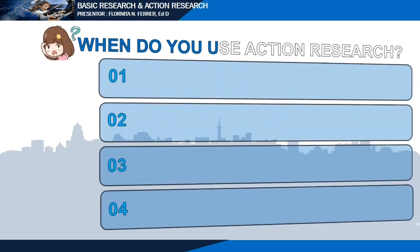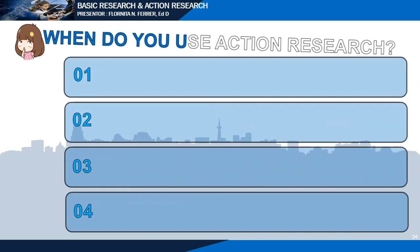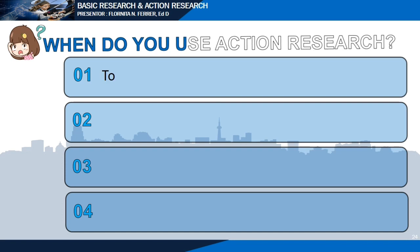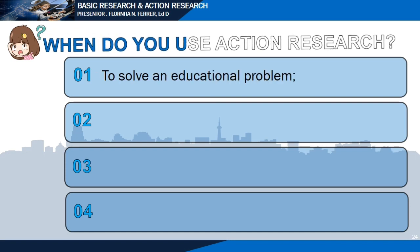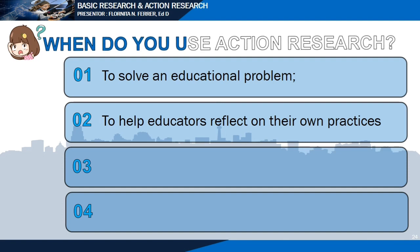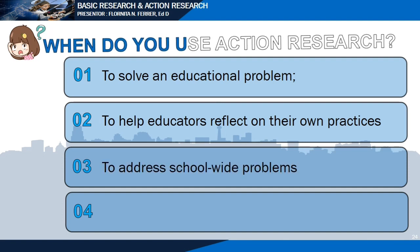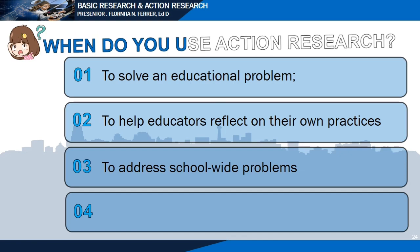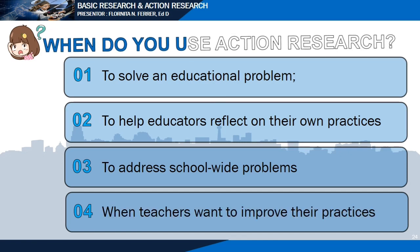When do you use action research? One is to solve an educational problem. Second, to help educators reflect on their own practices. Third, to address school-wide problems. And fourth, when teachers want to improve their practices.